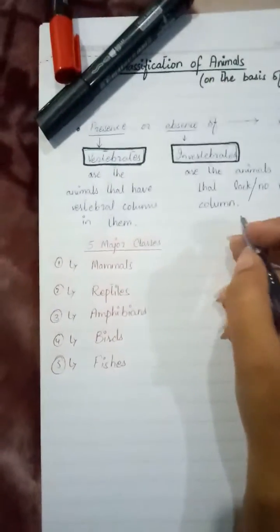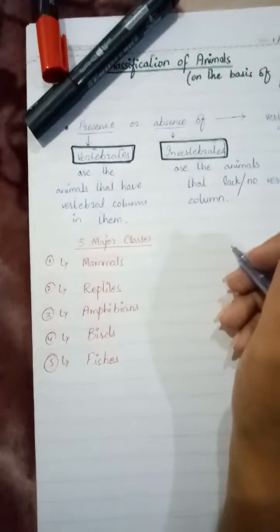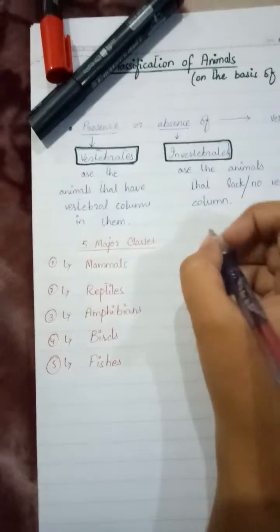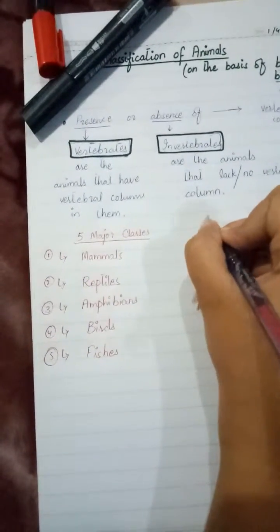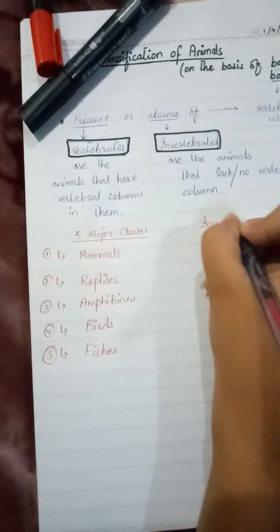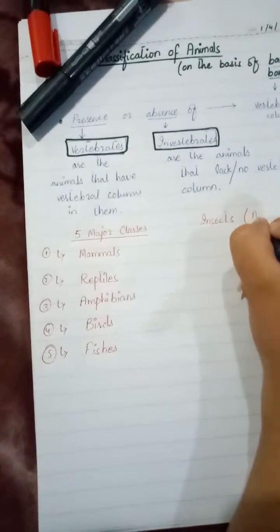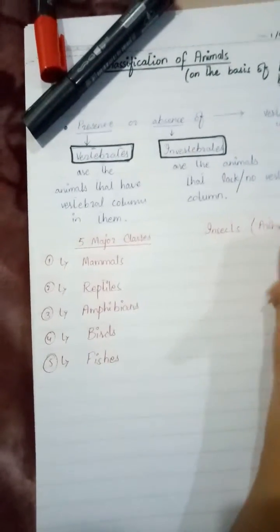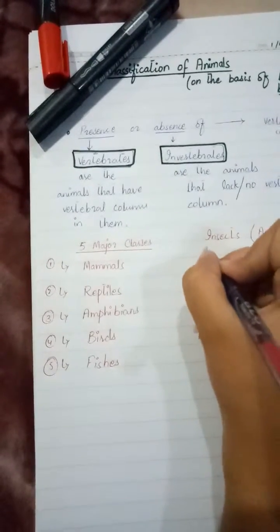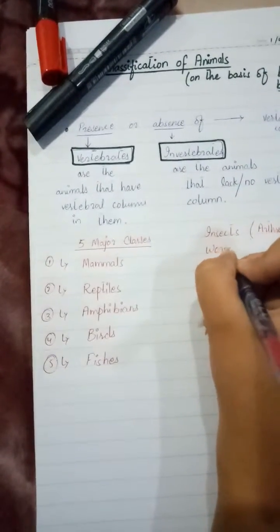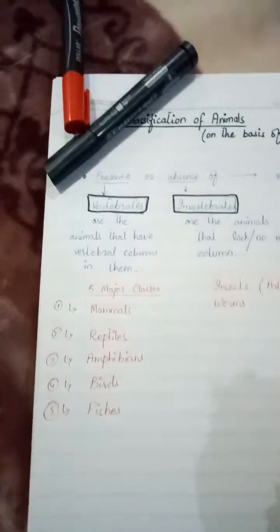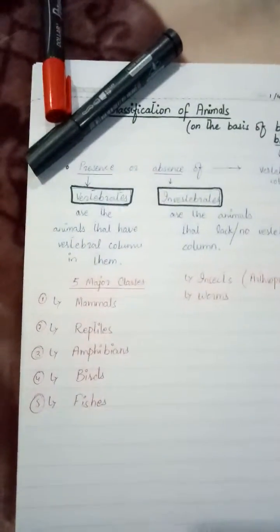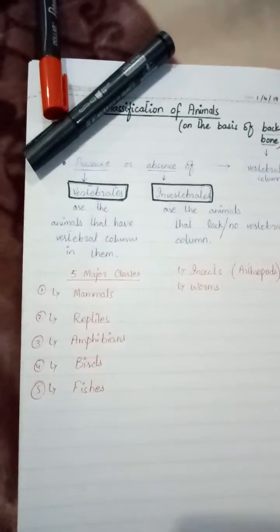And the invertebrates have nearly eleven classes, but we discuss a very few groups. Like they have insects that are known as arthropods. Their class name is Arthropoda. Insects and worms. These are in the syllabus of fifth class or sixth class and that's why I'll discuss only these two groups.